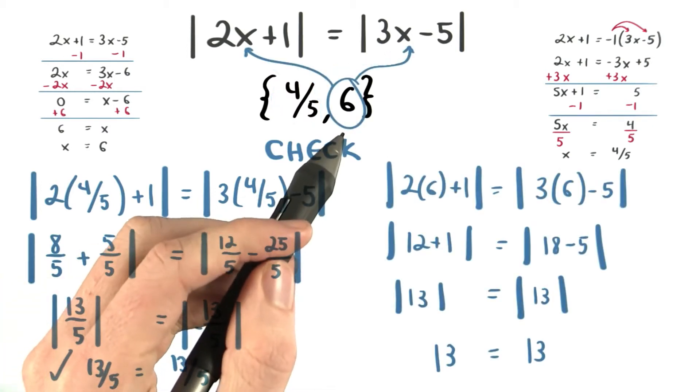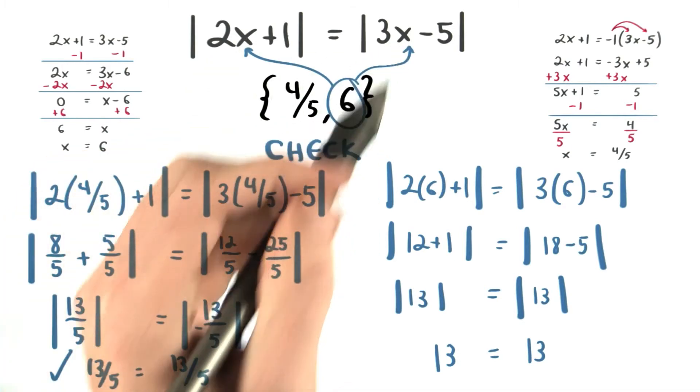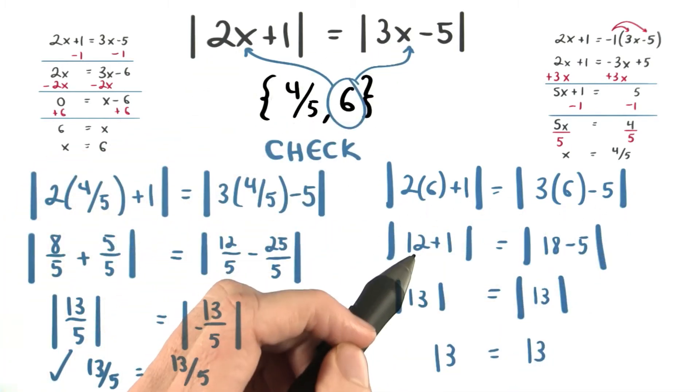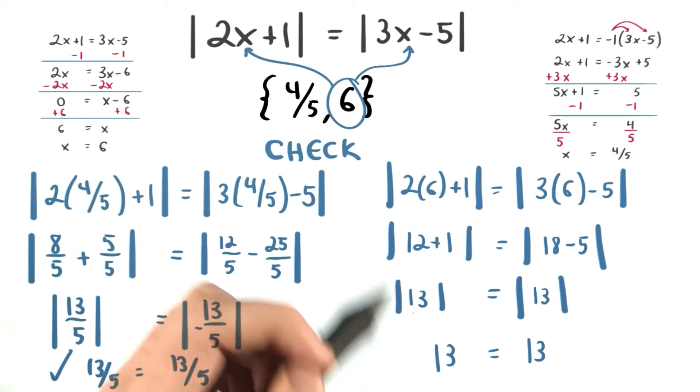I can do the same for the positive 6. I'll substitute it in for x to check my equation. 2 times 6 is 12, plus 1 is 13. And notice I still have the absolute value. So the absolute value of positive 13 is 13.